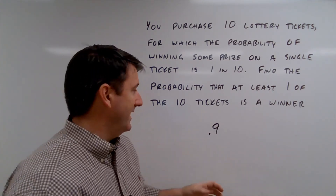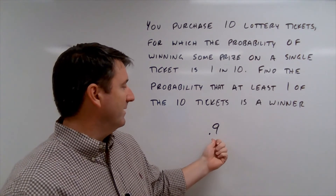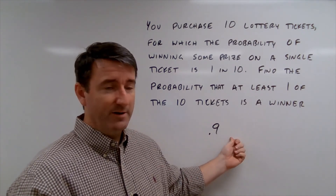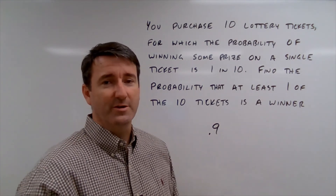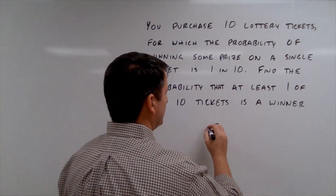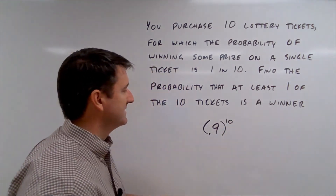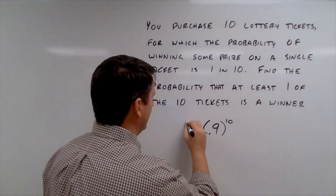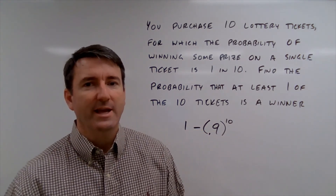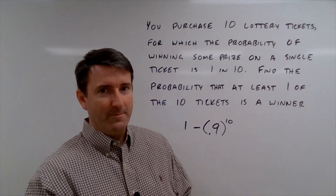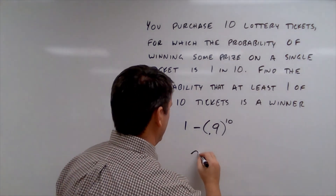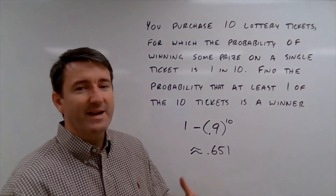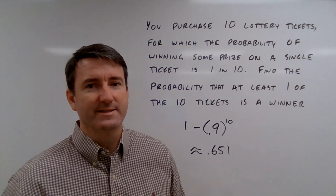There are 10 tickets and these are independent events, so we multiply 0.9 by itself 10 times — 0.9 to the 10th power. That gives us the probability that none of our tickets are a winner. If we subtract that from one, that gives us the probability that at least one of the tickets is a winner. And that gives us a probability of approximately 0.651. So there's about a 65% chance that at least one of these tickets is going to be a winner.